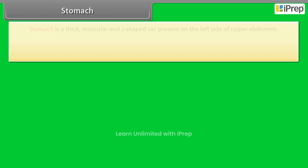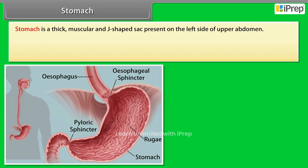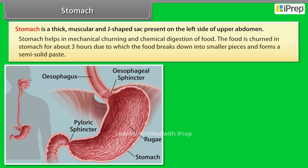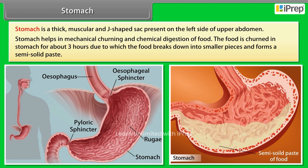The stomach is a thick, muscular, J-shaped sac present on the left side of the upper abdomen. It helps in mechanical churning and chemical digestion of food. Food is churned in the stomach for about three hours, breaking down into smaller pieces and forming a semi-solid paste.